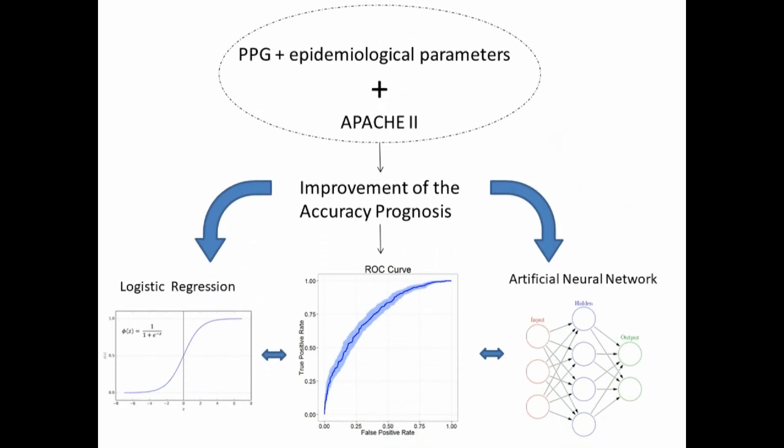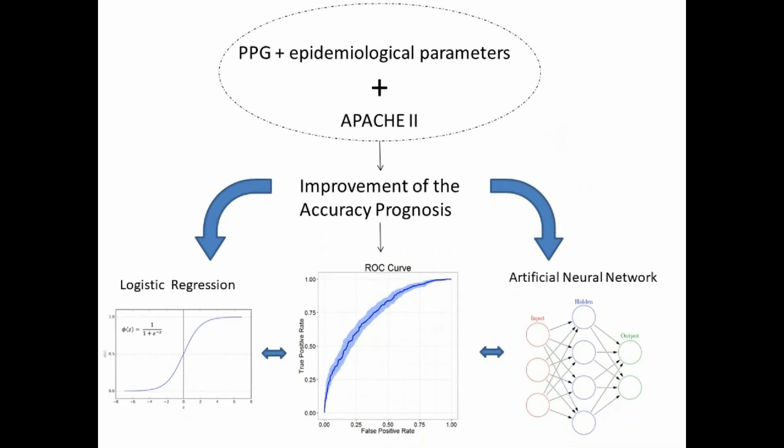Conclusion: The mortality model using variables obtained with photoplethysmography, with the inclusion of epidemiological parameters, is very accurate and, if associated with APACHE-2, improves prognostic accuracy. This tool is important to help in the clinical judgment of the intensivist.